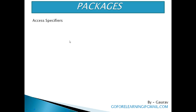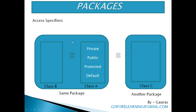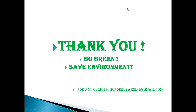Now we can discuss about access specifiers. Let's take two classes, class A and class B, in the same package, and class C in another package. Private members of class A are not accessible in class B or class C. Public members of class A are accessible in both class B and class C, even in another package. Protected members of class A are accessible in class B but not in class C, unless inherited. Default members of class A are accessible in class B but not outside the package, i.e., not in class C. So this is all about packages. Thank you for watching — please keep watching more videos to learn Java in an easy way. You can send me an email for any queries at goforelearning@gmail.com.